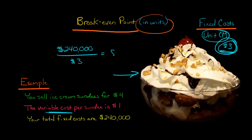This is going to give us a number - 80,000. This is not a dollar amount; this is an actual number of units, so 80,000 sundaes. If your company wants to break even - neither have a loss nor a gain - it's going to have to sell 80,000 sundaes.